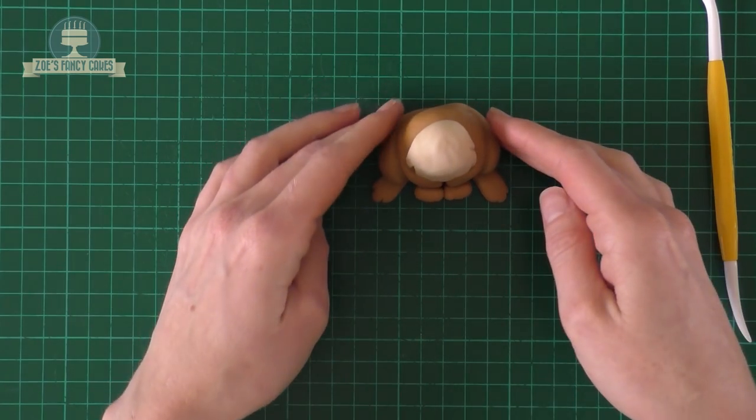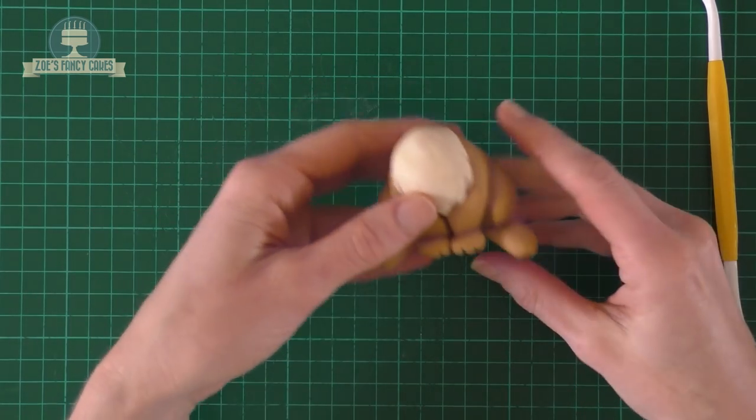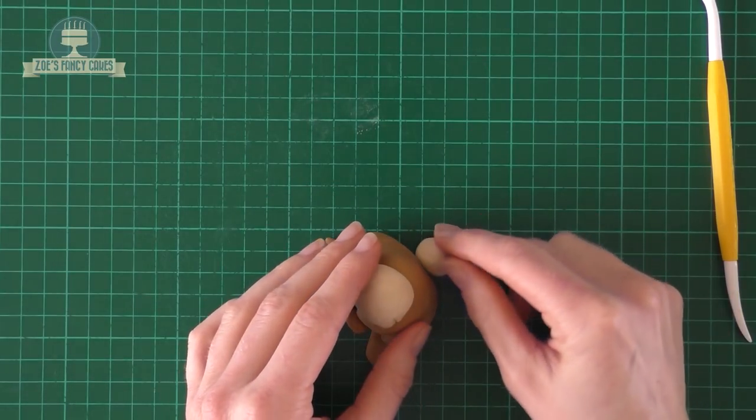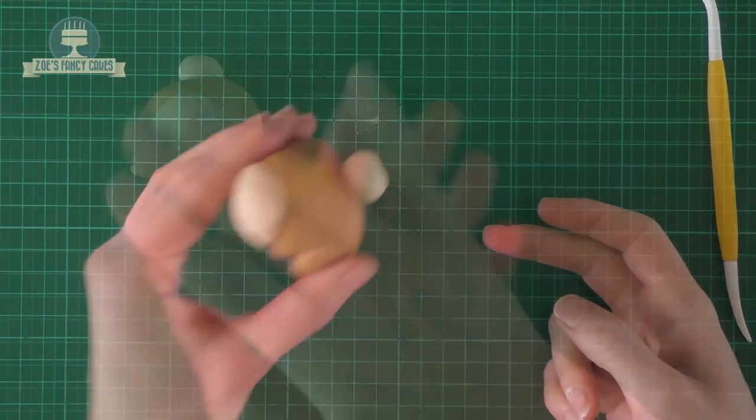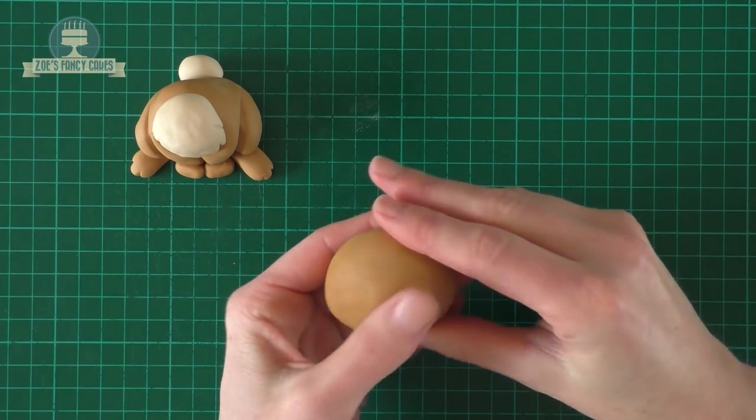I've got some more of the paler brown that we're just going to put into a ball and stick it on the bum for the tail. Now for the head, I'm having quite a large head, so it's very cartoony rather than realistic.